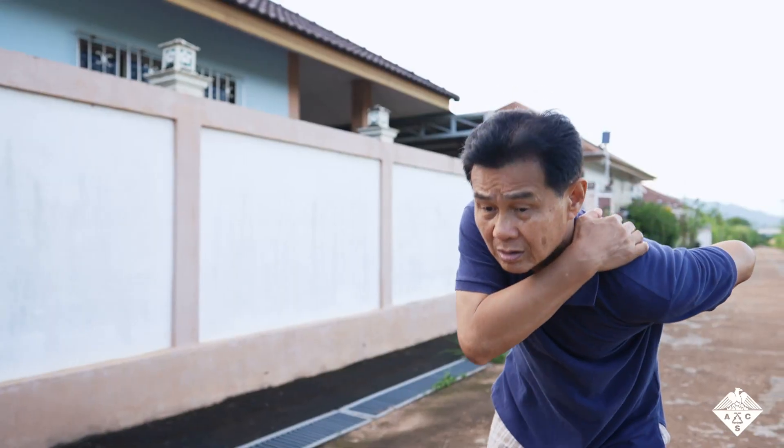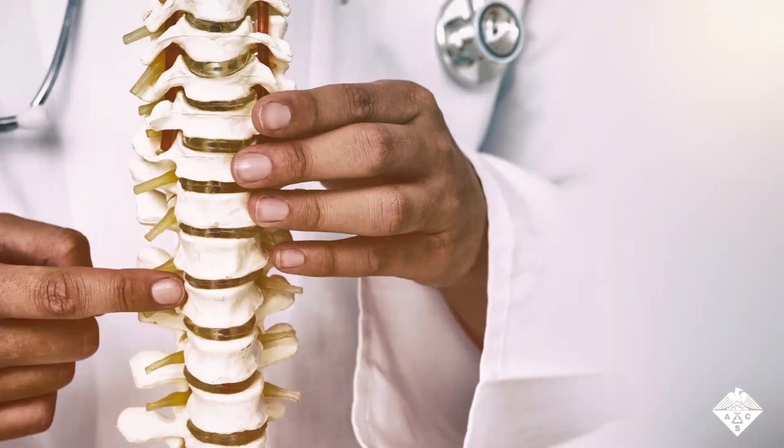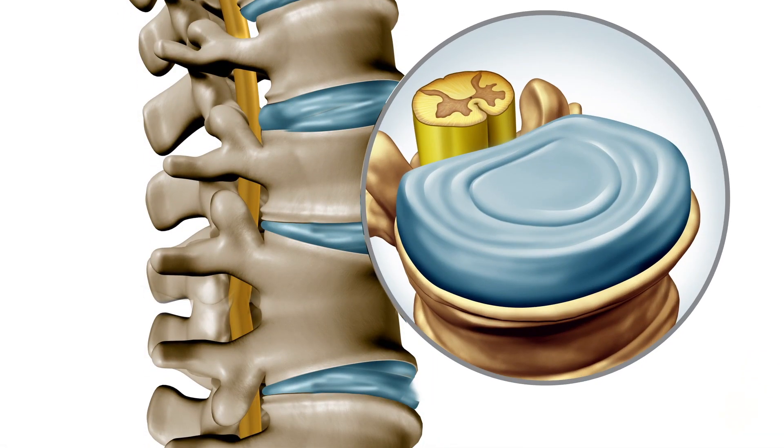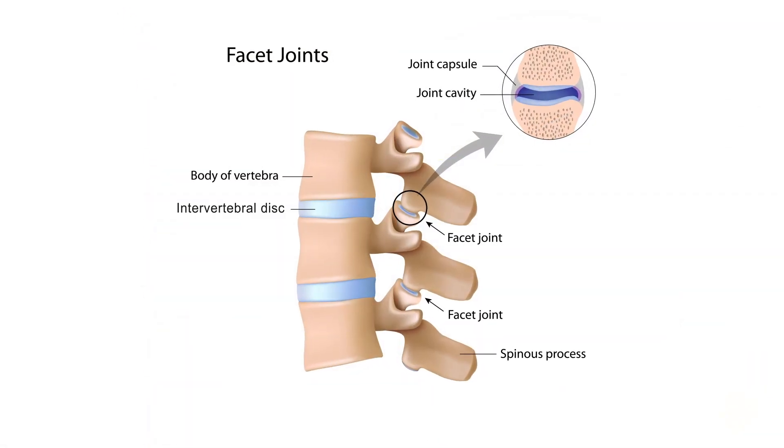Back pain affects many people at some point in their lives, and a common cause is the damage to the jelly-like discs between the vertebra, or the flexible rubbery cartilage within the joints of the spine.